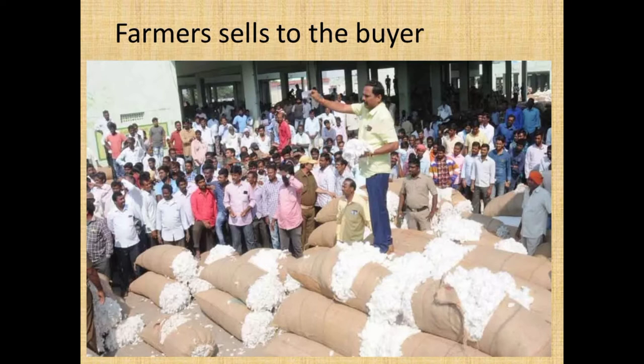Traders take this cotton to the market, and now it will go to the ginning mill — the place where cotton is pressed and all the seeds are separated. The cotton is then converted into bales, which are flat sheets of cotton. These bales go to the spinning mill, which converts them into cotton yarn or thread. The yarn is then sold to the yarn dealer.